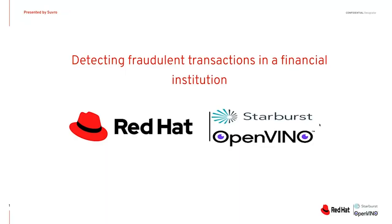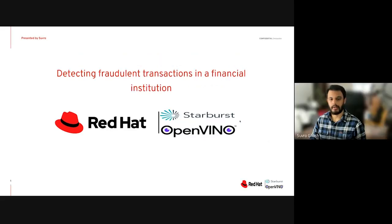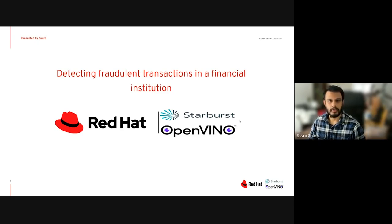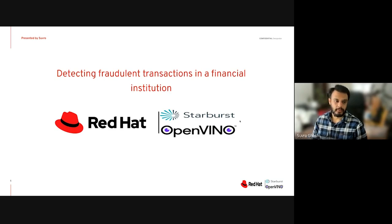Today I'm going to demonstrate how to detect fraudulent transactions in a financial institution. This demonstration will portray Red Hat OpenShift Data Science, a project which helps data scientists seamlessly train their models without figuring out the overhead of setting up a cluster and all the tools associated with it. I'll be using TensorFlow.